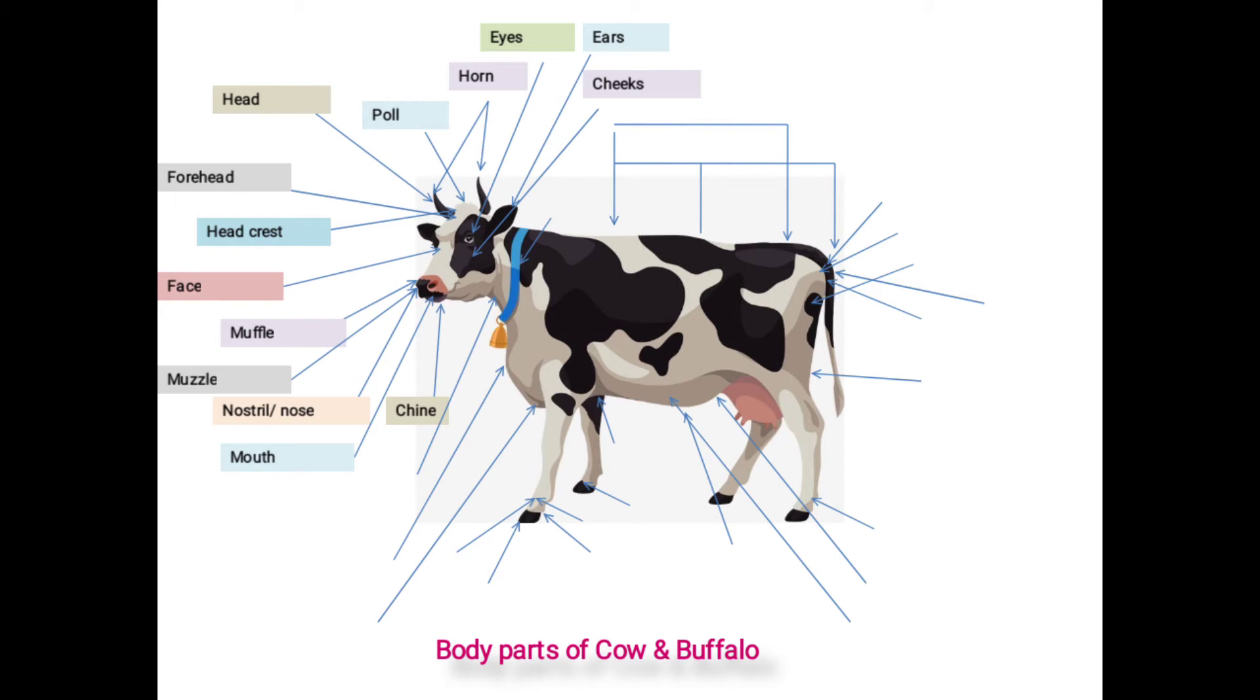This is about the first part, that is head. Next one is neck portion. This is second part or second region of the animal's body. This is the portion between head and body. It includes neck crest.